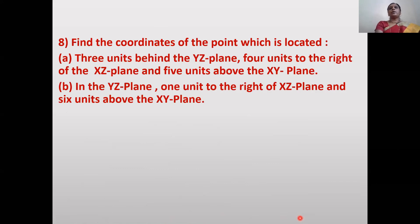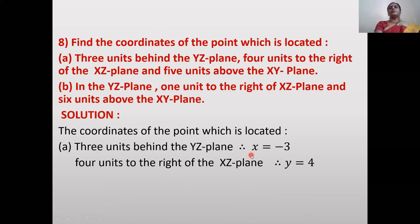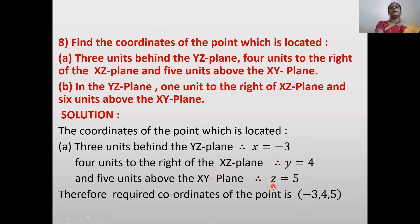Next problem: Find coordinates of point located 3 units behind the YZ plane, 4 units to the right of XZ plane, and 5 units above the XY plane. 3 units behind YZ → x = -3; 4 units right of XZ → y = 4; 5 units above XY → z = 5. Coordinates: (-3, 4, 5).